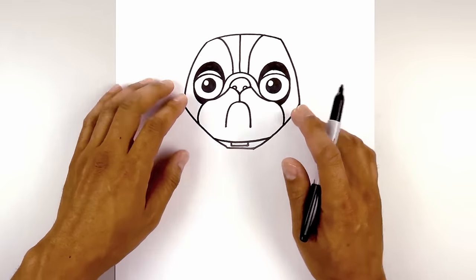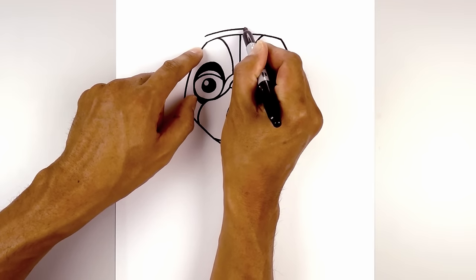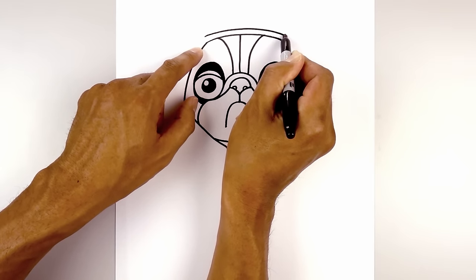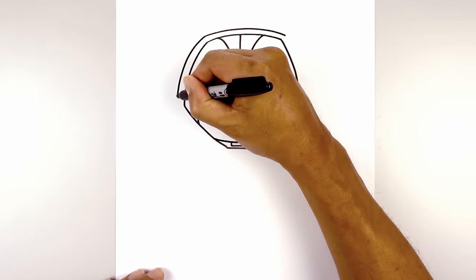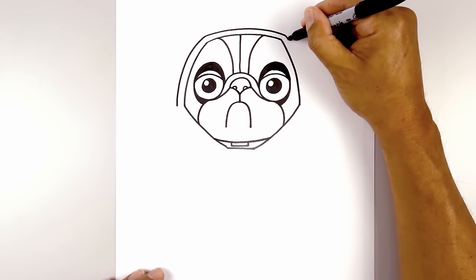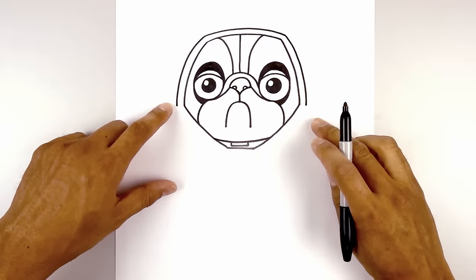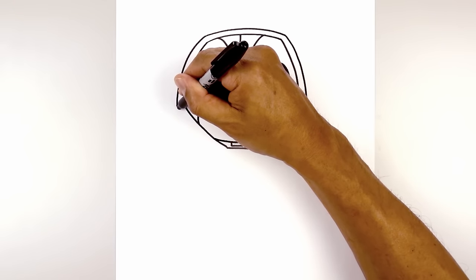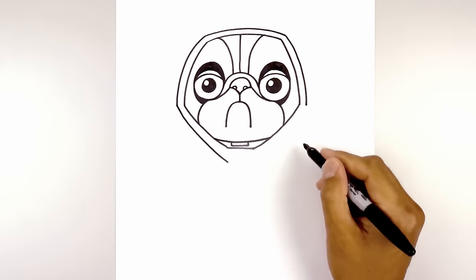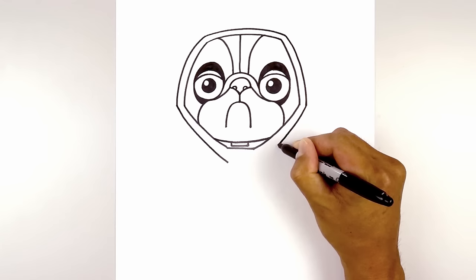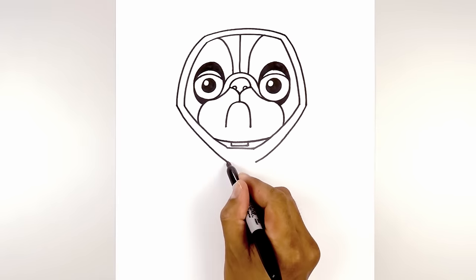Now we're going to move out and draw the outside of the hood. We're just going to trace this curve along the top, leaving an even space gap all the way across, then come down the side. From here we're going to pull this down a little bit lower in the center — from the left we curve down, come down a little bit lower in the middle, do the same thing on the right, curving down and then in. Now close off the bottom with another straight line.